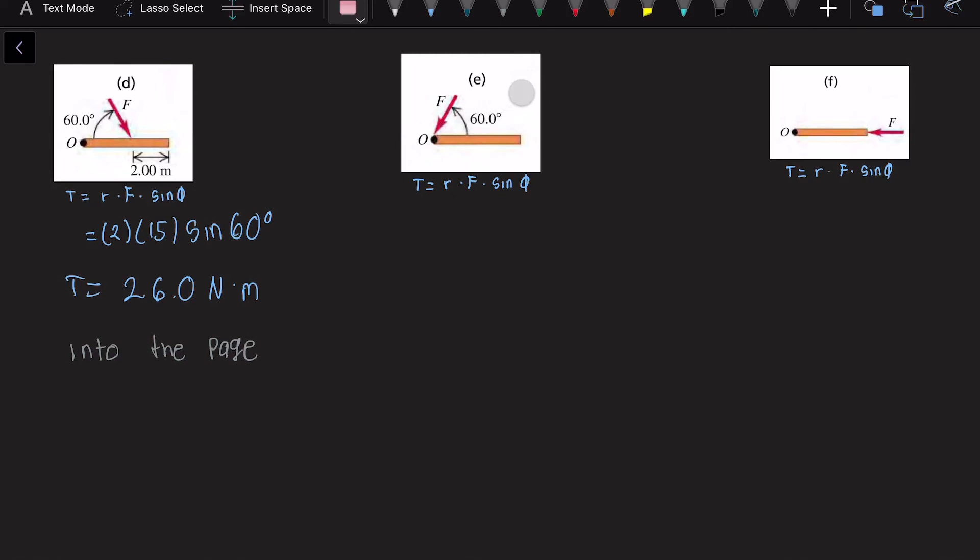For part E, the force is being applied specifically to the torque, so the radius is zero, so the torque is equal to zero. For part F, we can see that the force is being applied to a degree of 180.